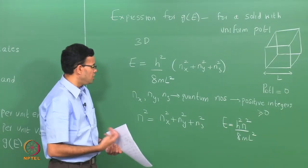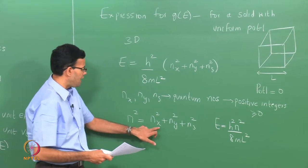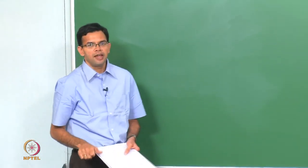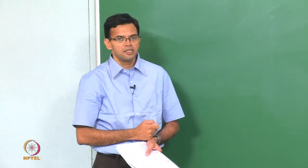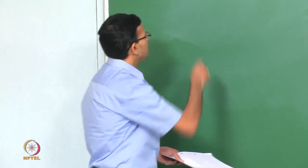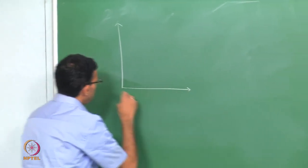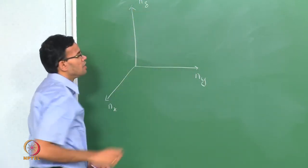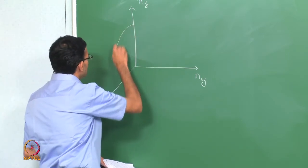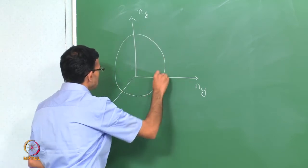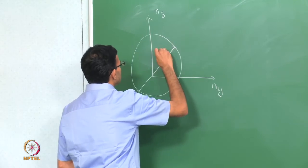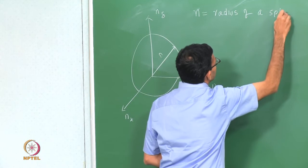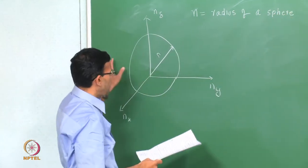N is also a positive integer and can take all possible values depending on Nx, Ny, and Nz. For small values of Nx, Ny, and Nz, the energy levels are discrete, but for large values they are essentially continuous. We can represent this by taking a 3D axis with the quantum numbers along all three axes. In this case, N represents the radius of a sphere made up of Nx, Ny, and Nz.